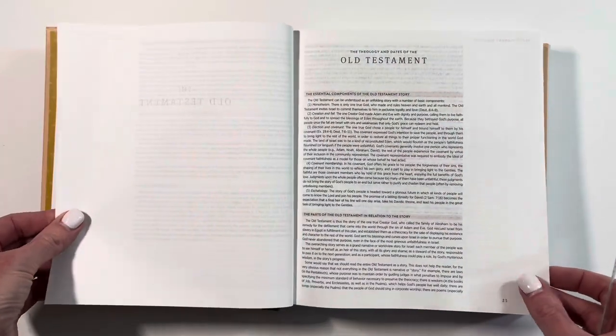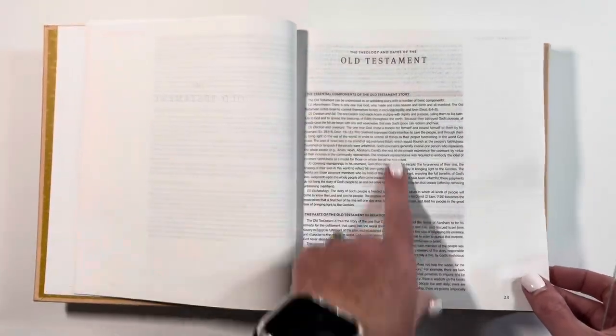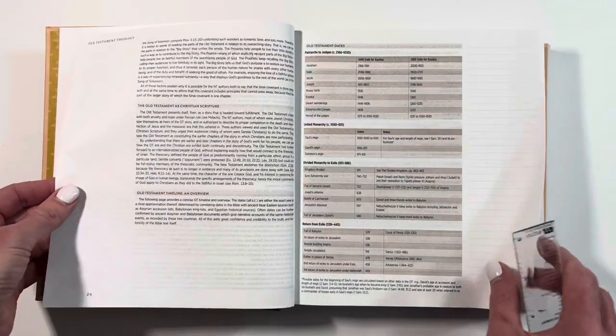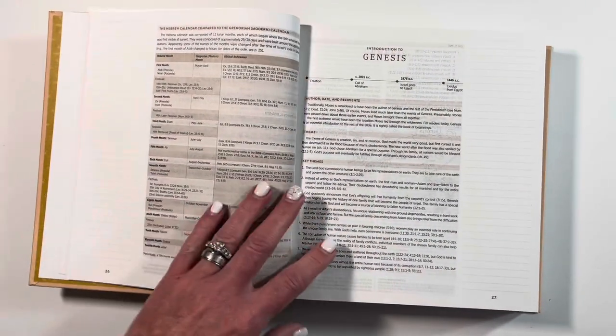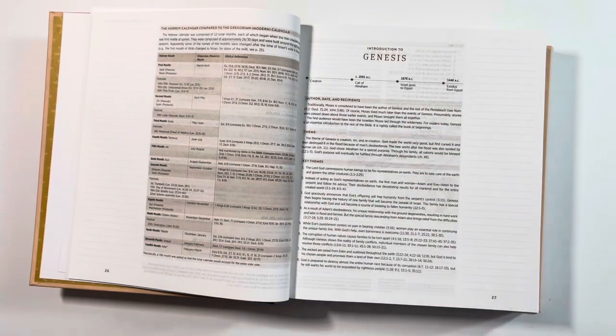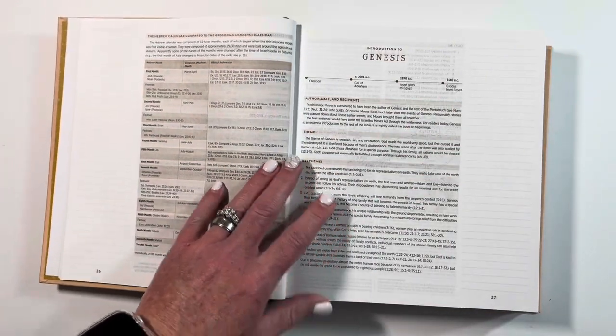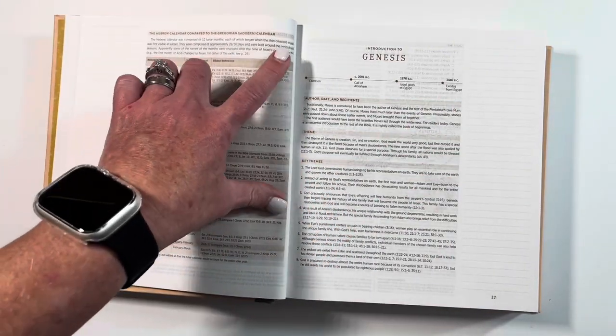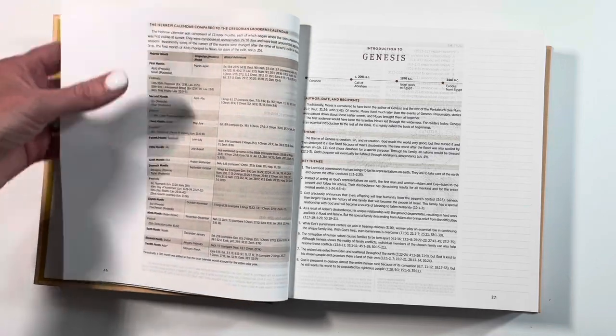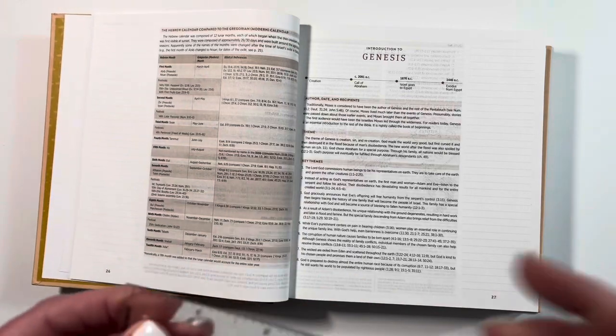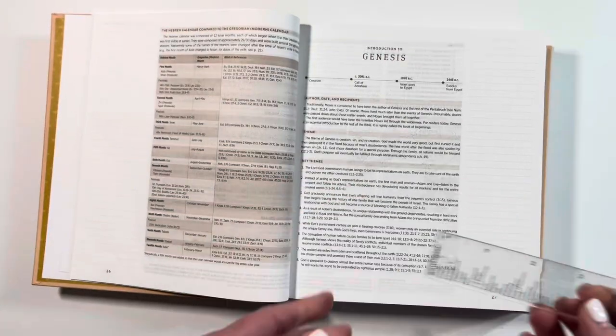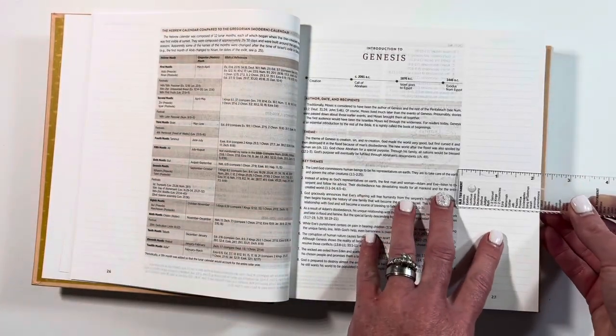Overview of the Bible and the Old Testament dates and information, and then we jump right into Genesis. So it actually is going to give us a timeline and it's going to give us a Hebrew calendar. That's pretty awesome.